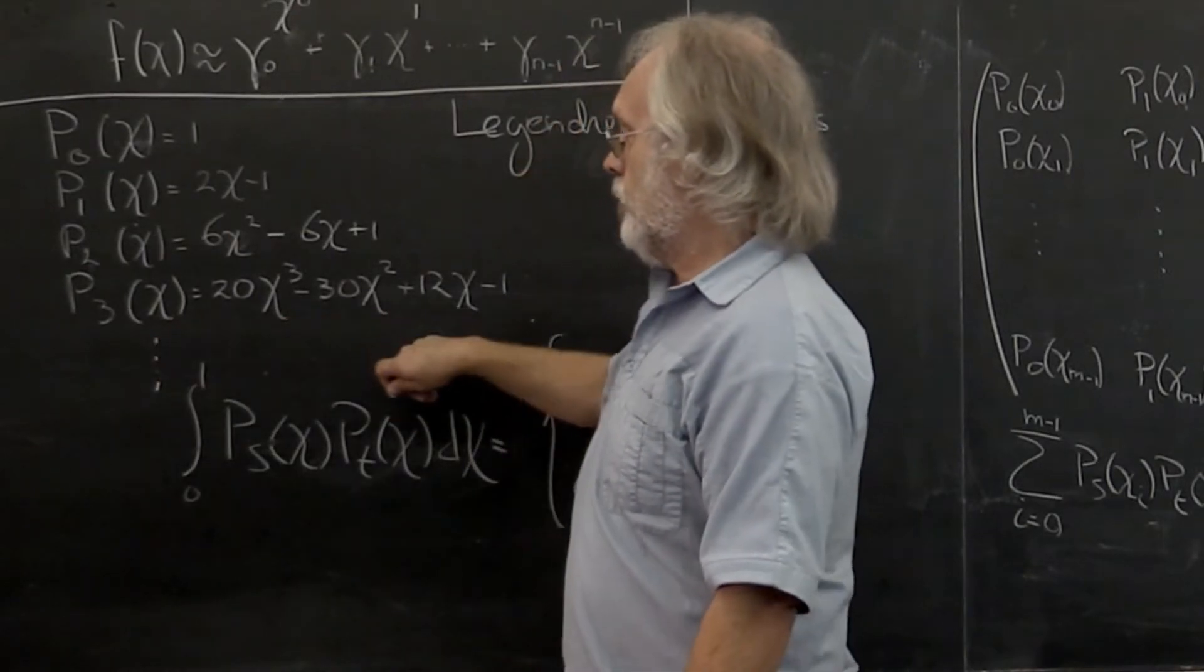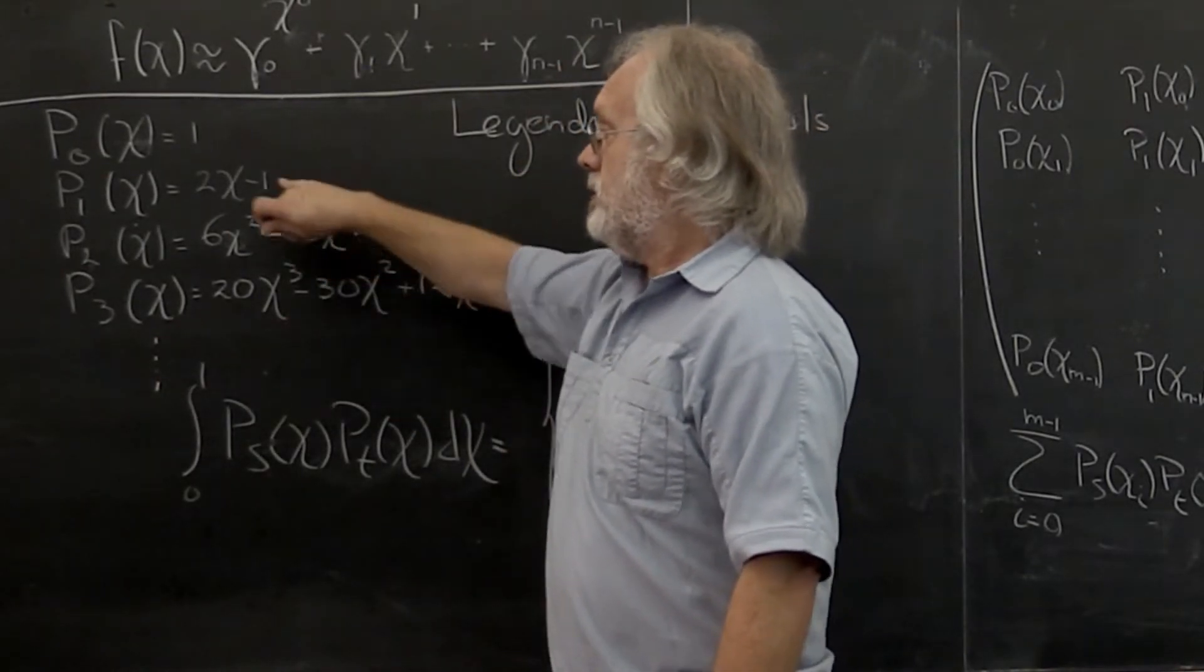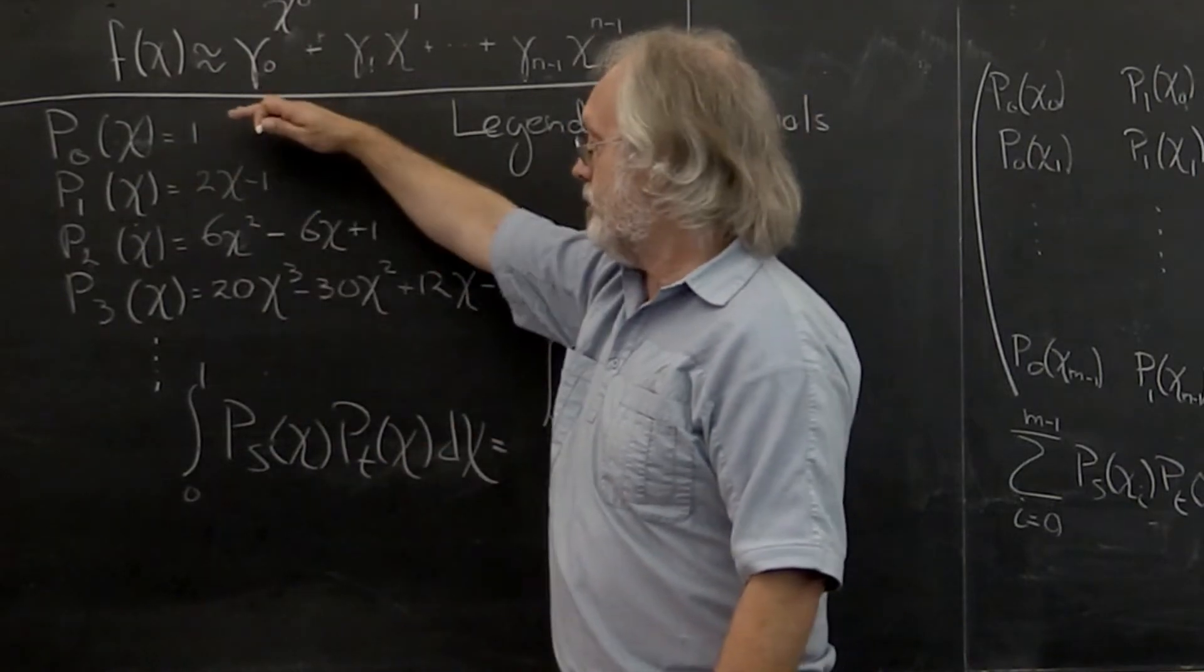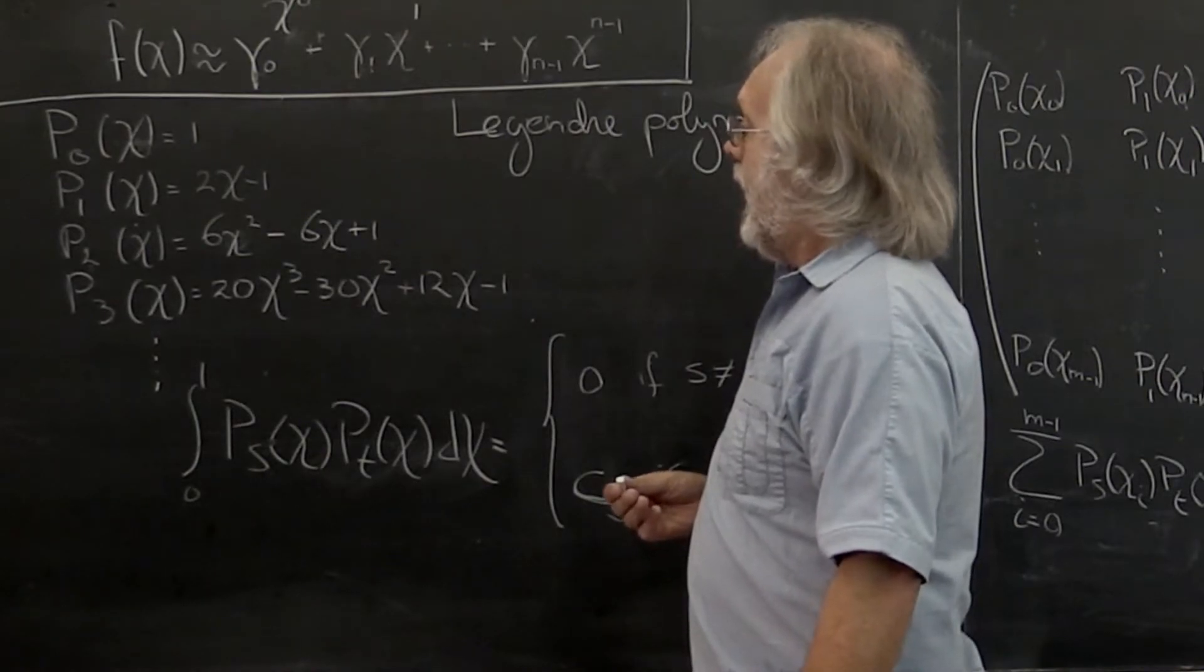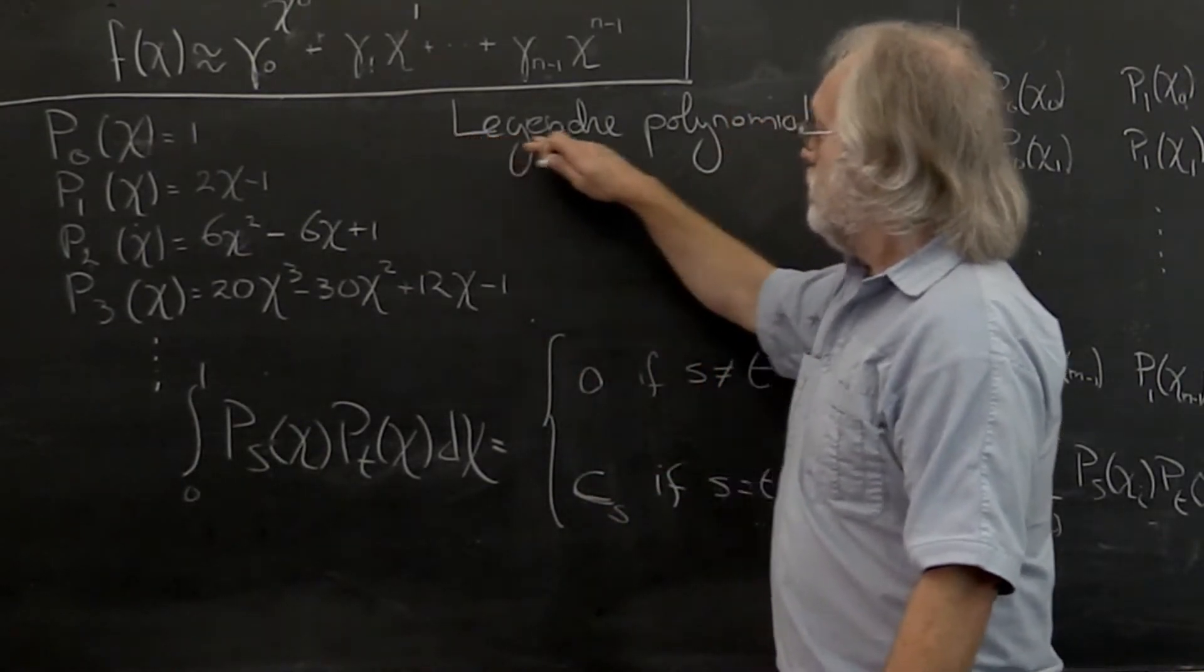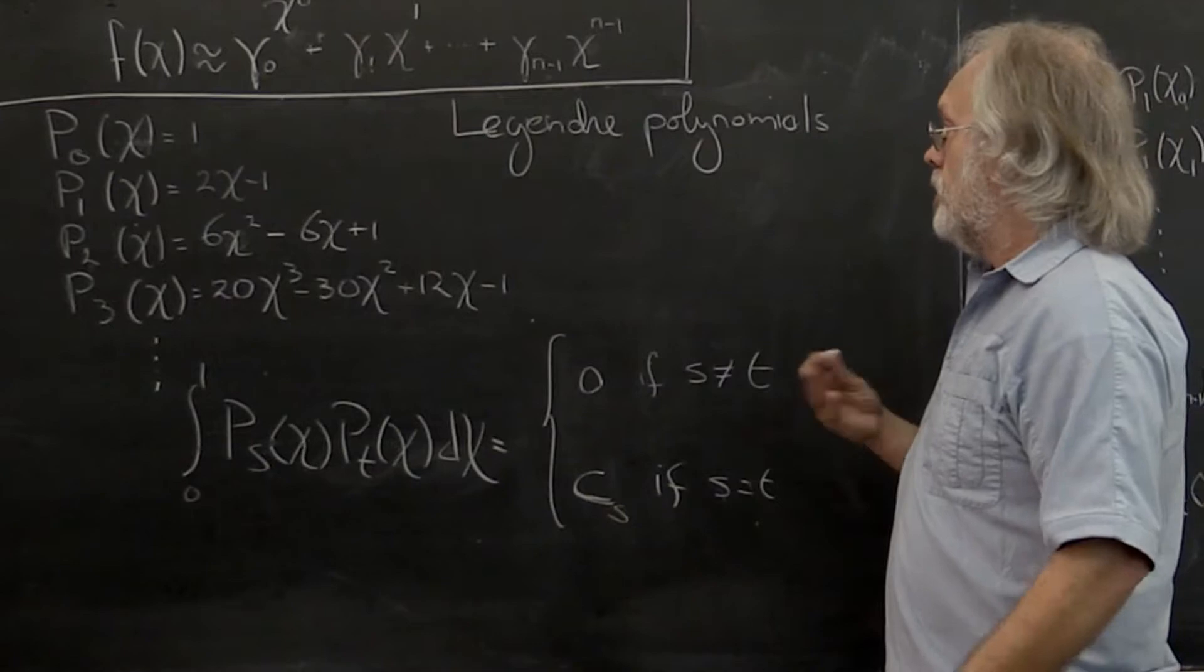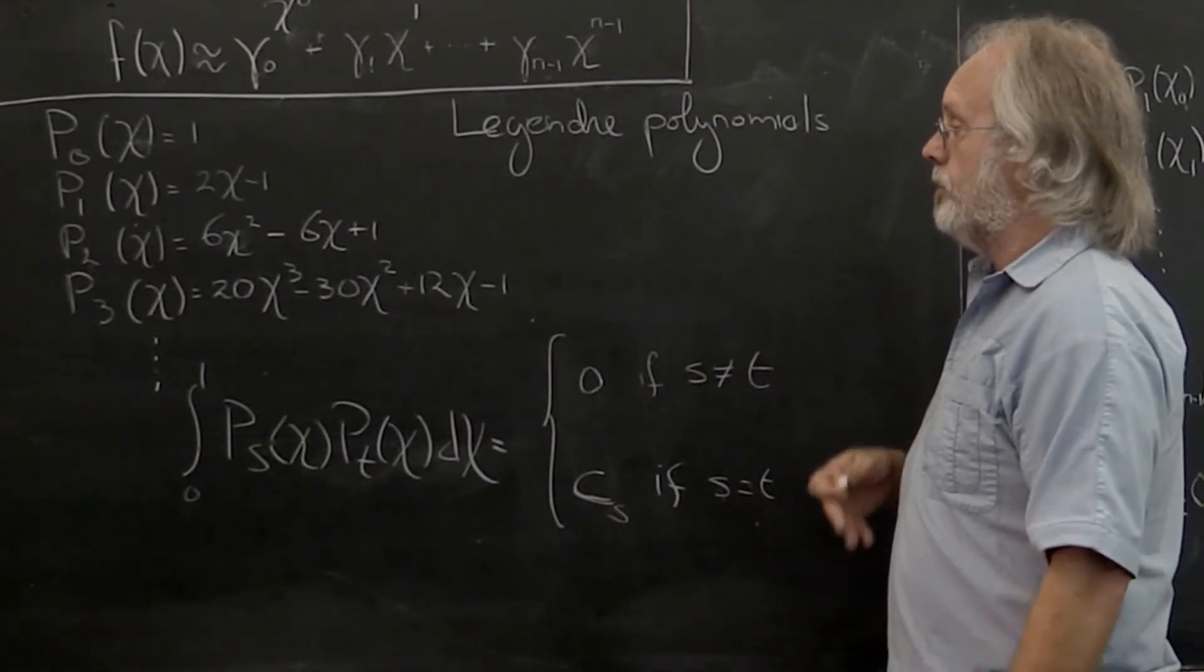There is actually a recurrence relation between these different polynomials. But here I've just written out a couple of the first ones. These particular polynomials are known as Legendre polynomials on the interval from 0 to 1.